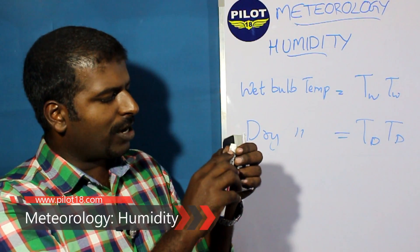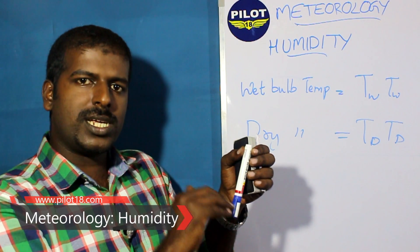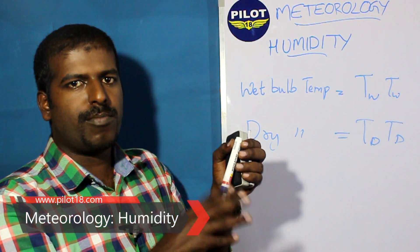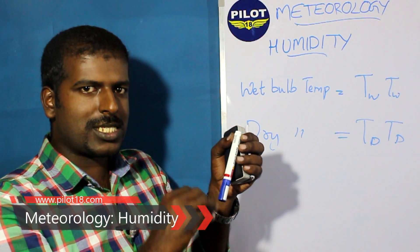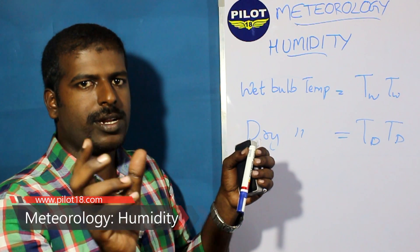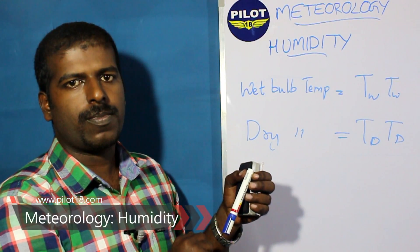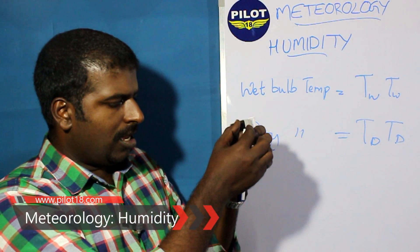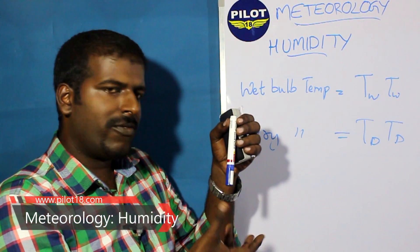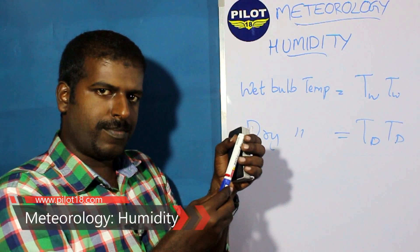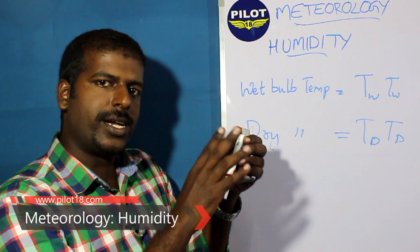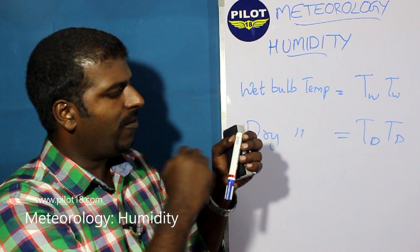If relative humidity is 100%, the air can't hold any more water vapor, so the water in the muslin cloth is not evaporating. That means wet bulb temperature equals the normal air temperature — the dry bulb temperature. Dry bulb temperature is the normal temperature with no cloth covering. When the air is very dry, most of the water evaporates and the wet bulb shows a much lower temperature compared to the dry bulb temperature.